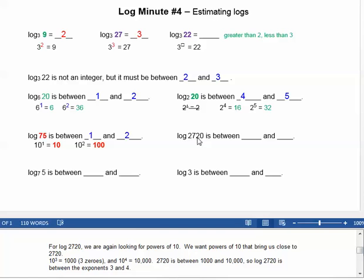For log 2720, we're again looking for powers of 10 that bring us close to 2720. 10 to the third is 1,000, and 10 to the fourth has 4 zeros, so 10,000. 2720 is between 1,000 and 10,000. So log of 2720 is between the exponents 3 and 4.